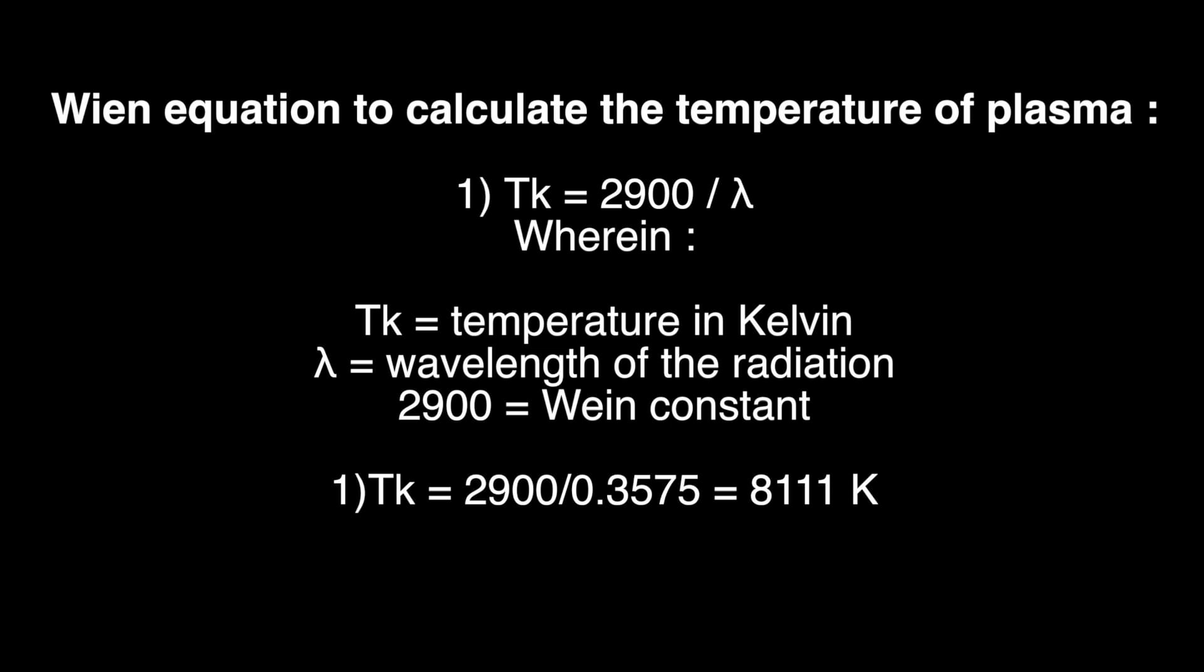While the Wien equation is in microns, since 1 micron is 1000 nanometers, we have 0.357 microns.